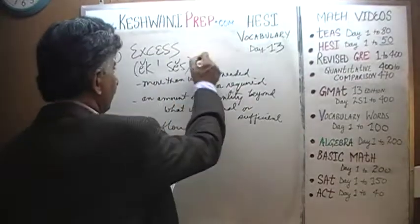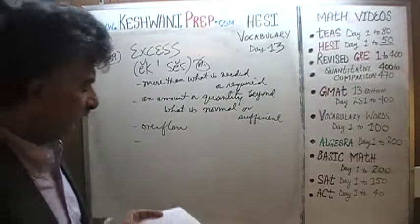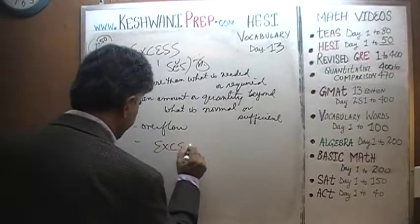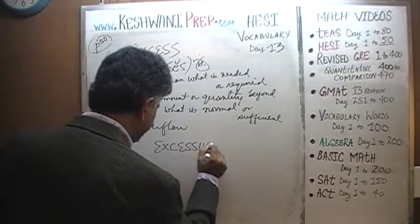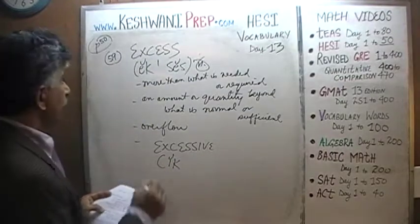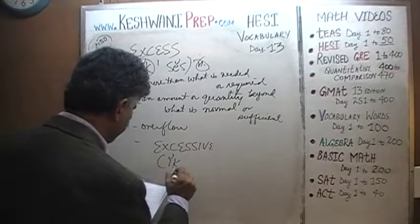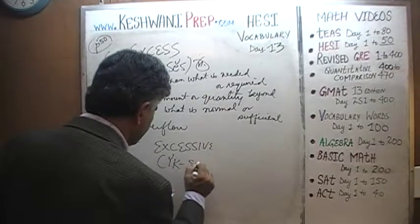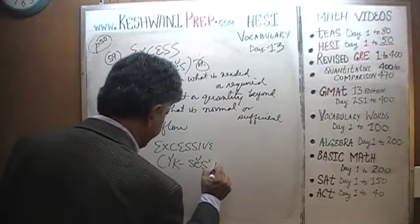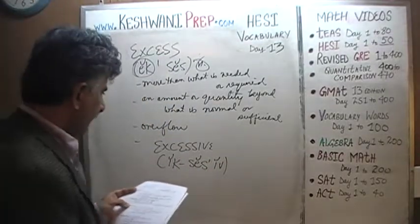Excess is a noun, as you can see. What's the adjective of excess? If you have excess of something, you say that you have an excessive amount of it. Excess is a noun; excessive is the adjective — excessive amount.